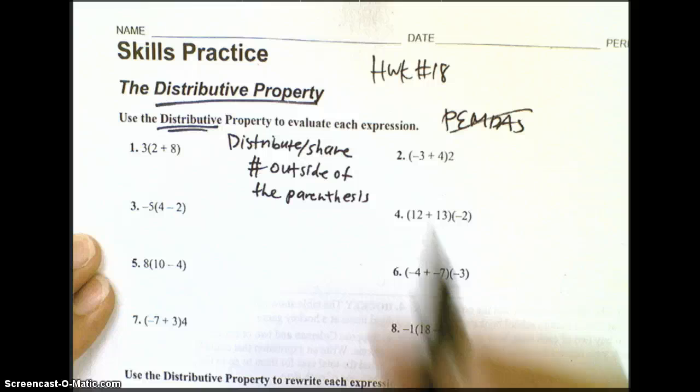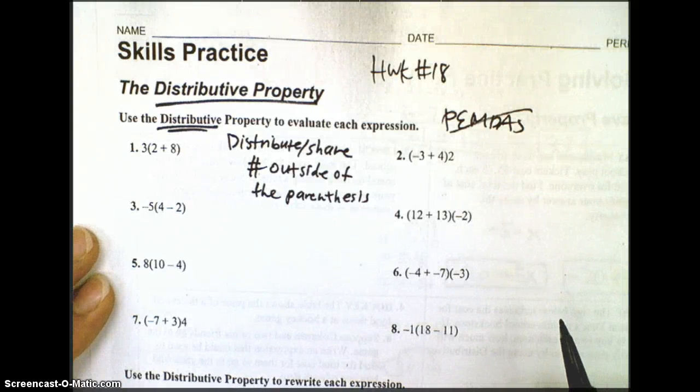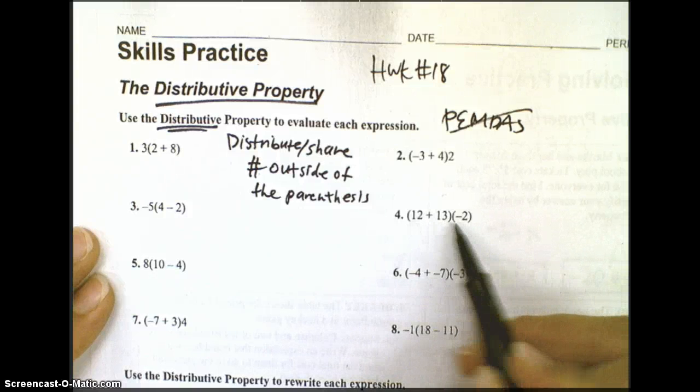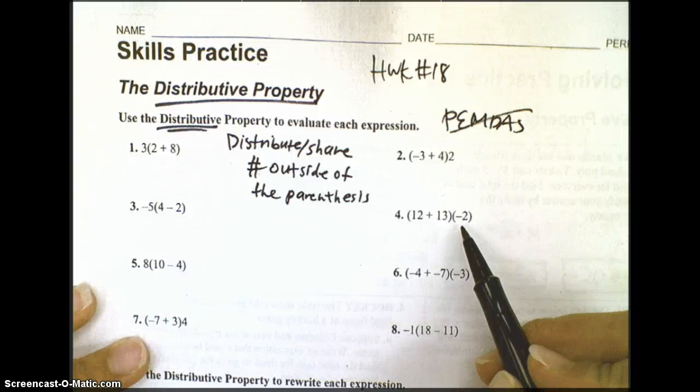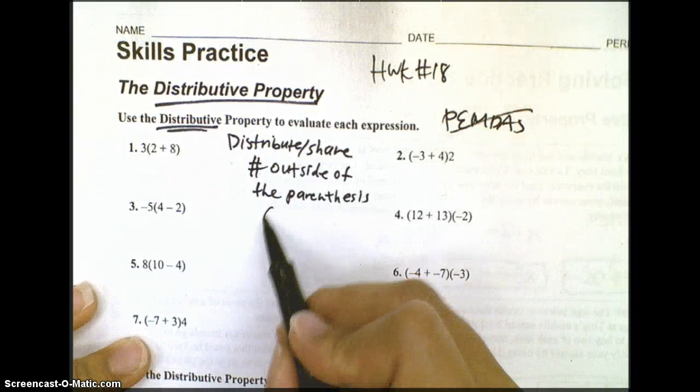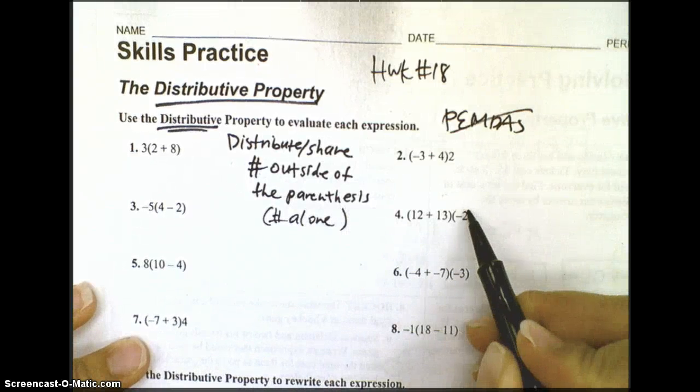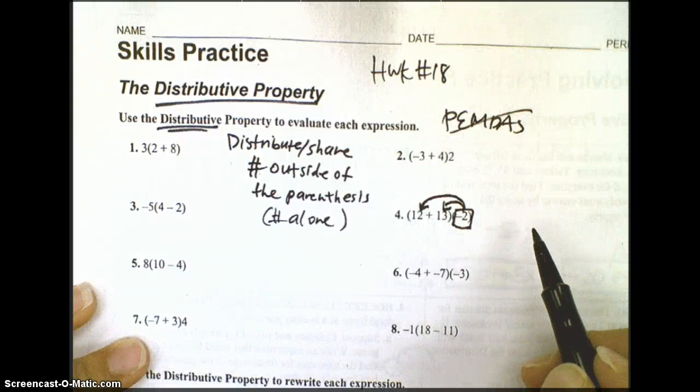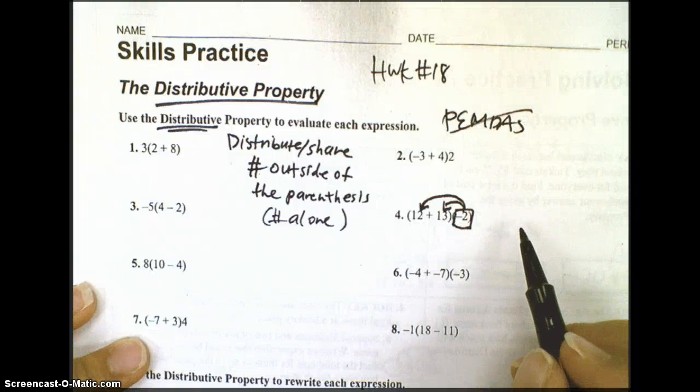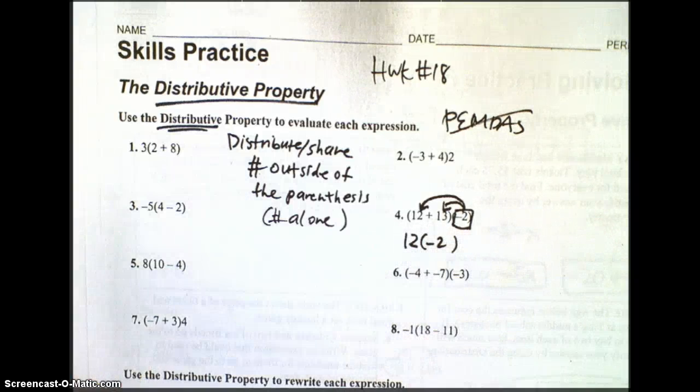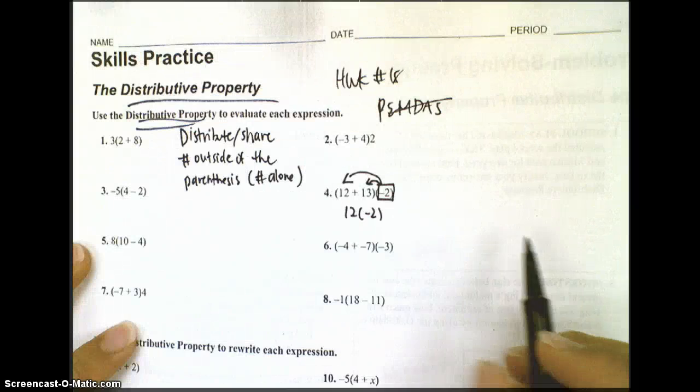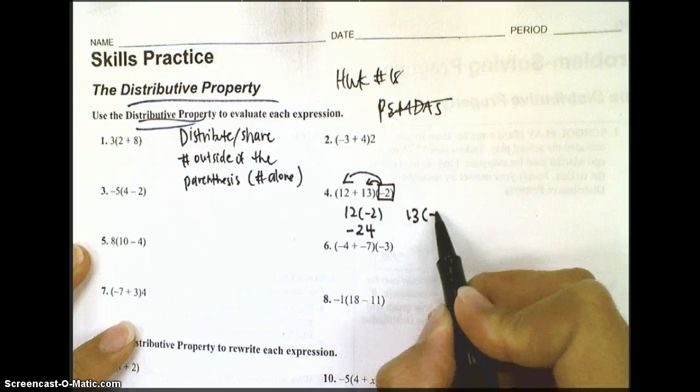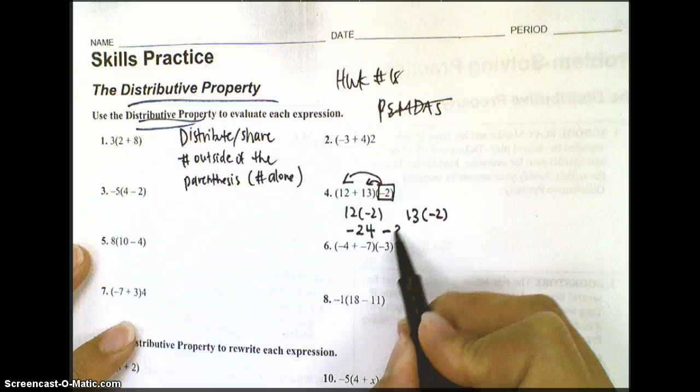Let's go ahead and look at number 4. We did several of them in class together. Outside of the parentheses, both are actually in parentheses. So which one are we referring to? We're referring to the number that's alone, which is the negative 2. So we're going to distribute that twice to the numbers that are in the parentheses. When we're distributing, we want to use multiplication. So we're going to multiply 12 with negative 2, which gives us negative 24, and we're going to multiply 13 with negative 2, and we're going to get negative 26.